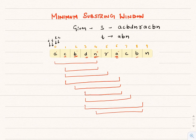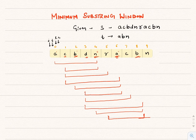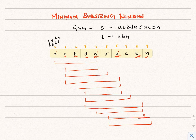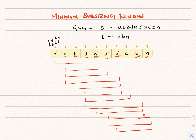We shrink again from the left. The window becomes index 5 to index 8, which has A and B but not N — missing one character. We increase the right pointer, giving index 5 to index 9, which now holds A, B, and N. We try to shrink: the left pointer at index 5 holds R, which is not in the pattern. So we shrink. The window becomes index 6 to index 9 with size 4 — less than our previous best, so we update our answer. I is now index 6 and J is index 9.